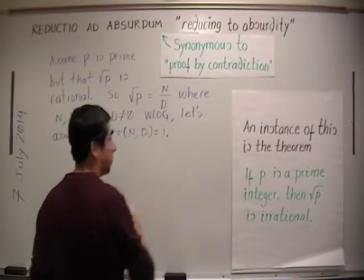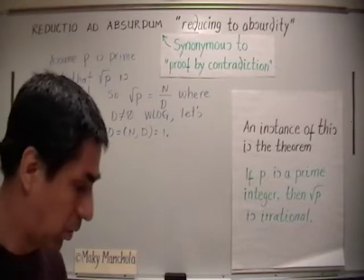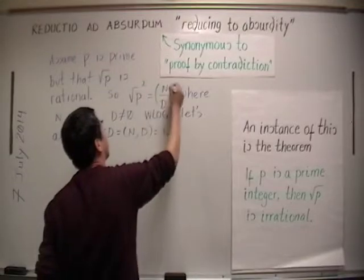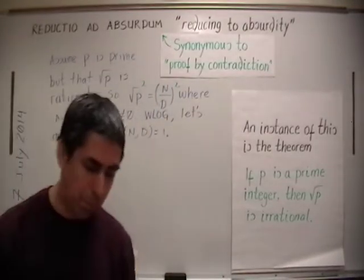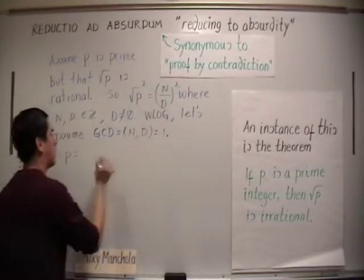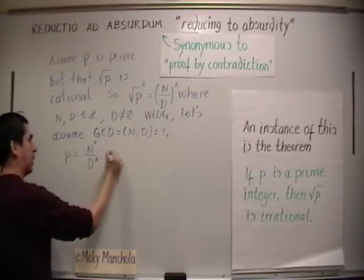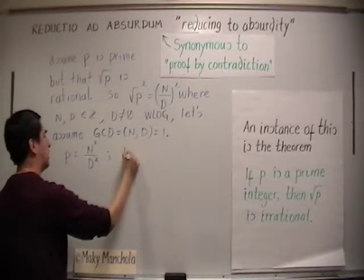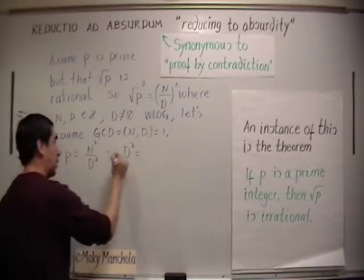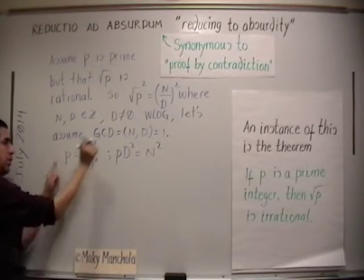Let's pay attention to the equation itself and manipulate it. Let's get rid of that square root by squaring both sides. The left-hand side becomes p, and the right-hand side becomes n squared over d squared. If you cross-multiply, you get p times d squared equals n squared.